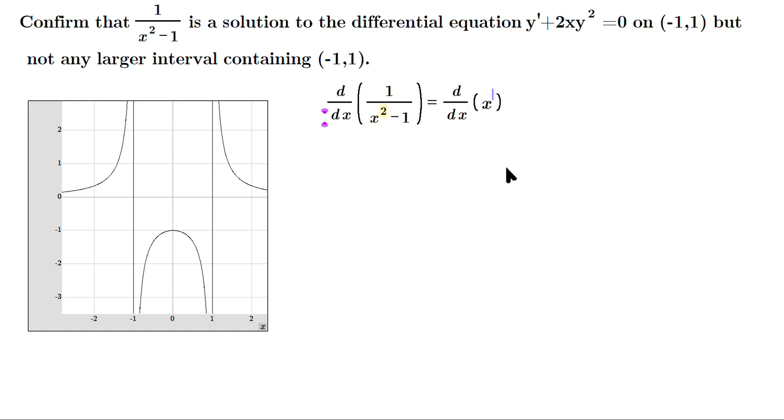You can write this as d/dx of (x²-1) raised to the negative first and then use the power rule and the chain rule. So bring the negative one down and then (x²-1) up there, do -1 minus 1 which is -2, and multiply by the derivative of that x²-1 on the inside.